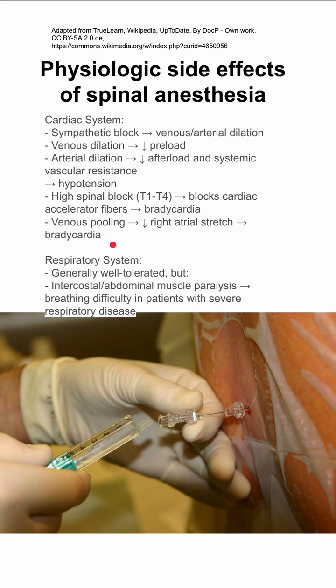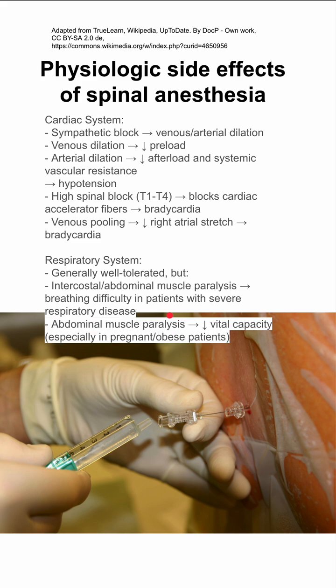In the respiratory system, spinals are usually well tolerated. But if you have intercostal or abdominal muscle paralysis, you can have breathing difficulties in patients with severe respiratory disease. If you have abdominal muscle paralysis, you can have a decrease in your vital capacity, especially in obese or pregnant patients.